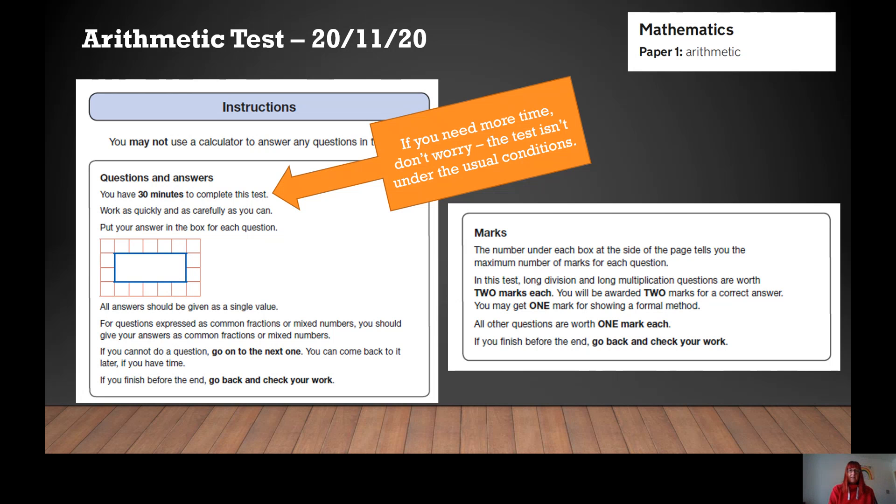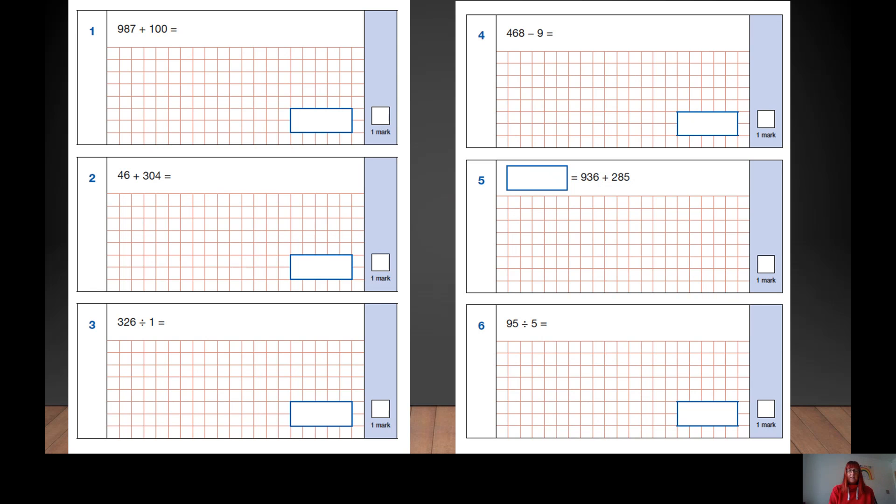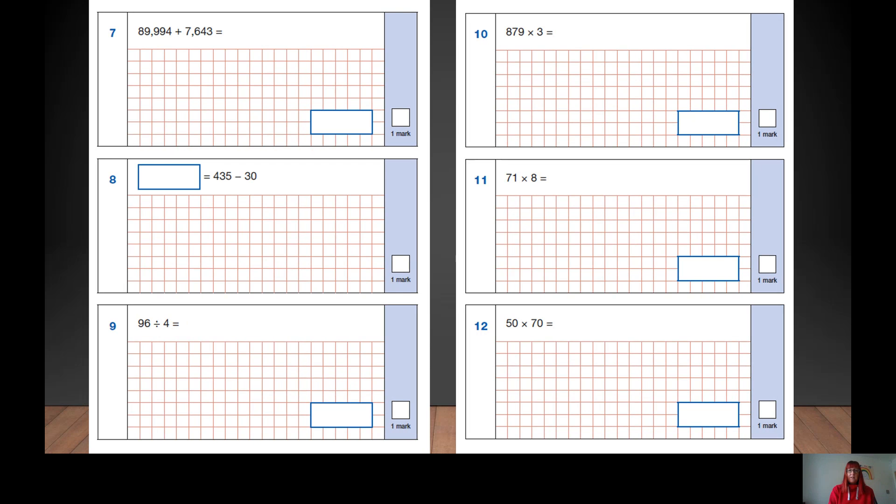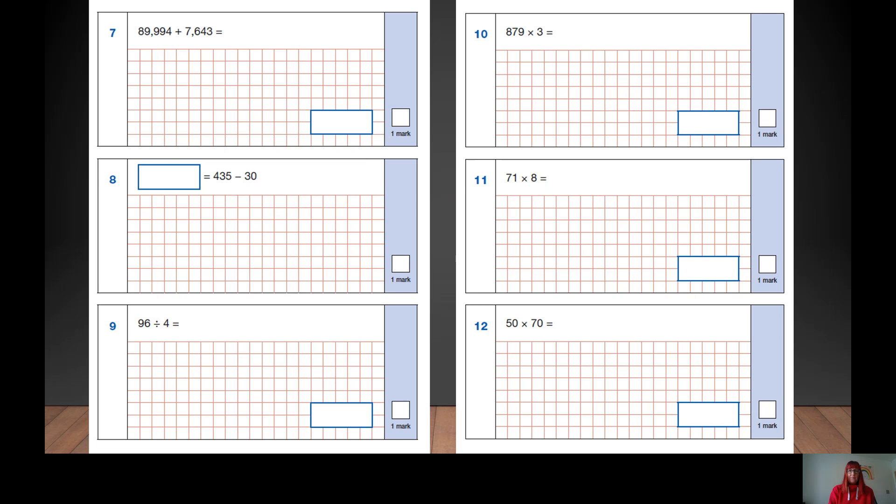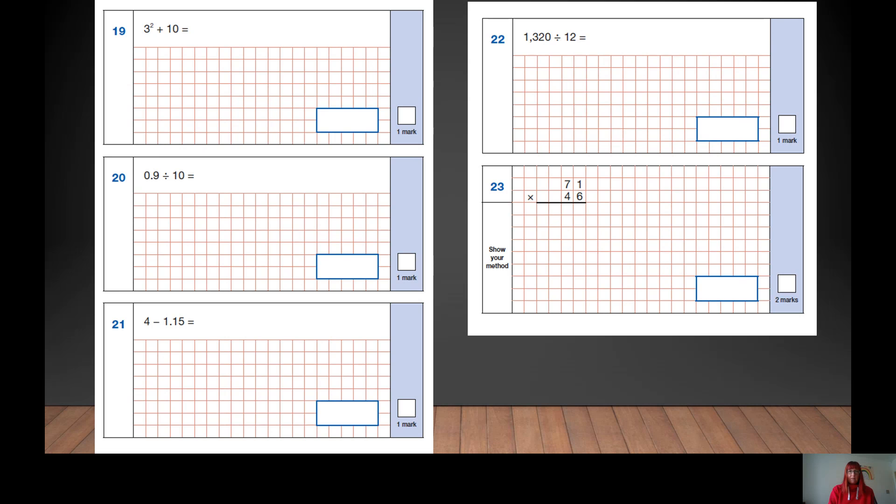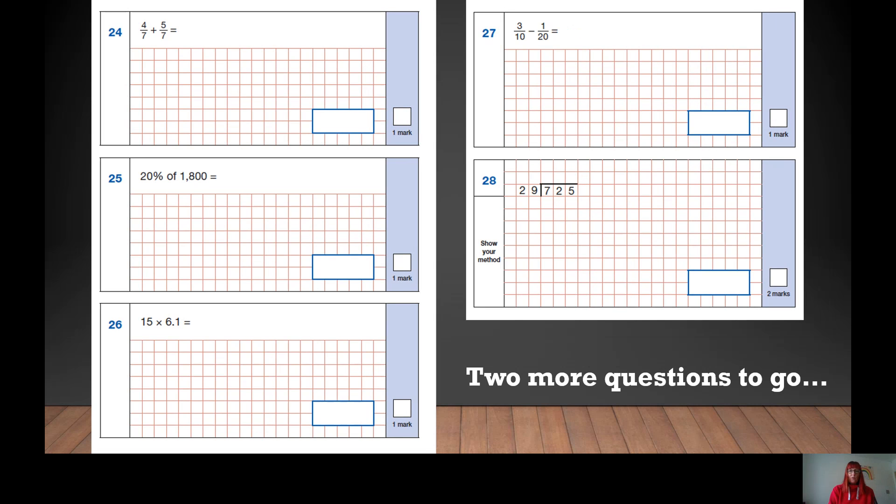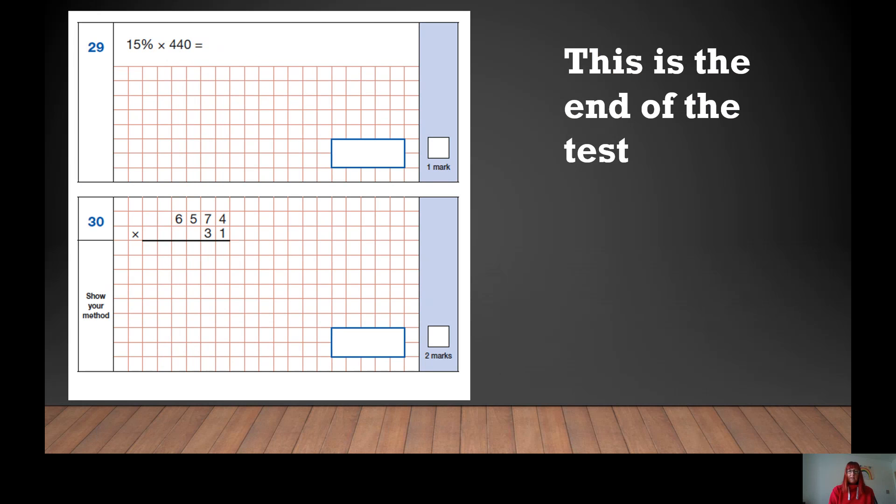First part of the test. Here we have questions one to six. Questions seven to 12. Questions 13 to 18. Questions 19 to 23. Two marker there on question 23. 24 to 28. And now there are two more questions to go. Question 29 and 30.